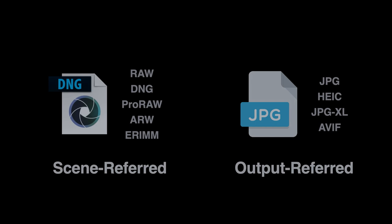Raw data formats, scene-referred, such as Adobe's DNG, are designed to store the light distribution of the scene, compensating only for the sensor and optical characteristics of the camera. Apple ProRAW is a flavor of DNG designed to store scene-referred data computed from iPhone multi-bracket fusion. But this data is not meant to be viewed, as it needs to be converted to an output-referred encoding.